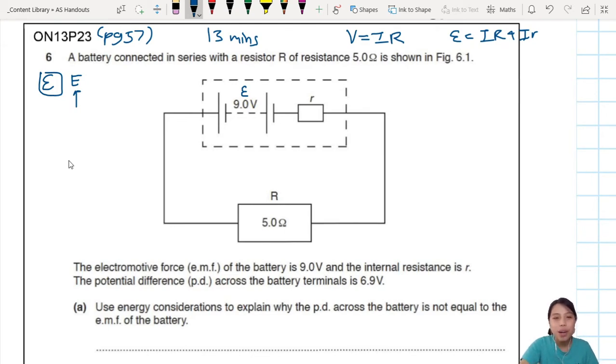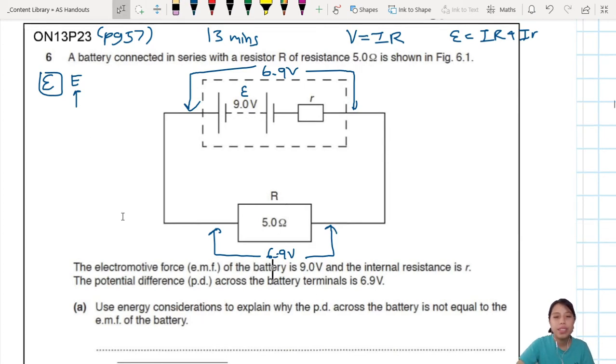Okay, so internal resistance r, potential difference across the battery terminals is 6.9 volts. So that's 6.9 volts, which is from this end to this end across the terminals. And that also means that is also 6.9 volt drop when you go past these resistors. So across there is also 6.9 volt. There's only one resistor there.